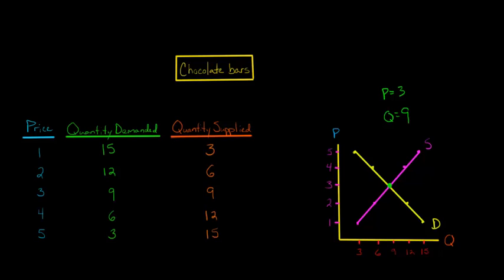Conversely, if we were to set the price at $4, we would have a surplus because people are willing to supply more than what people are demanding. We would have chocolate bars left over.